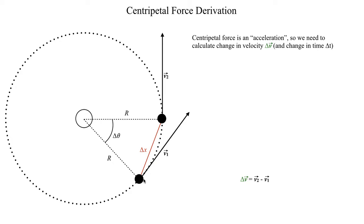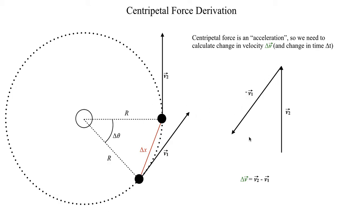If we pick two points along the circular path — point one with velocity vector v1 and a later point with velocity vector v2 — the object travels some distance delta x between them. To calculate acceleration, we need the change in velocity. That requires vector subtraction: we compute v2 minus v1. Using the tail-to-tip method, the resultant delta v is the green vector shown here.